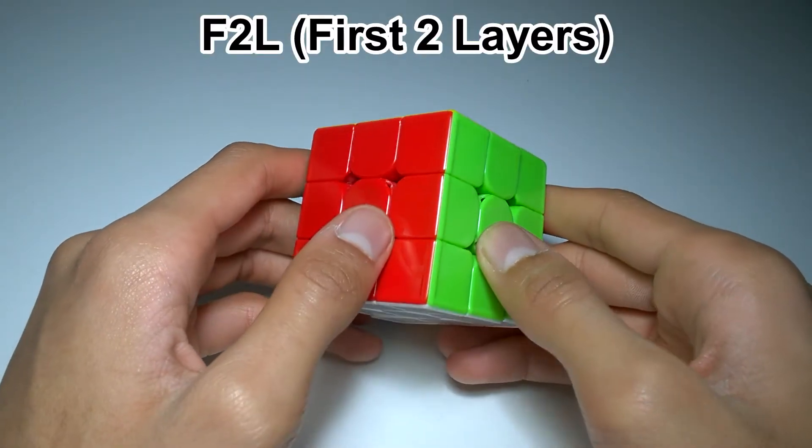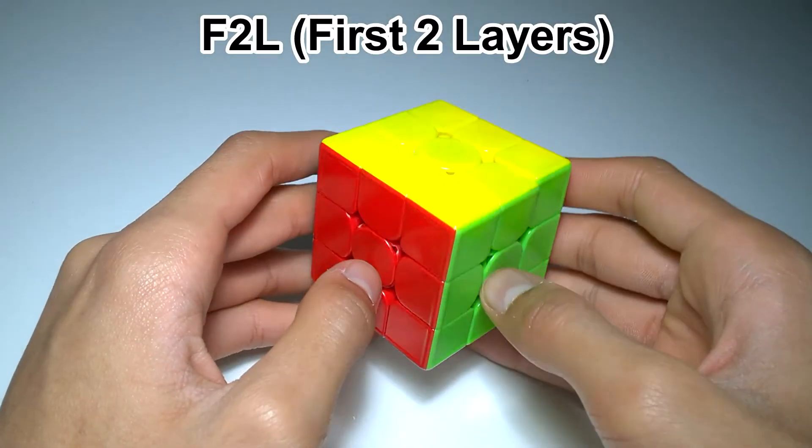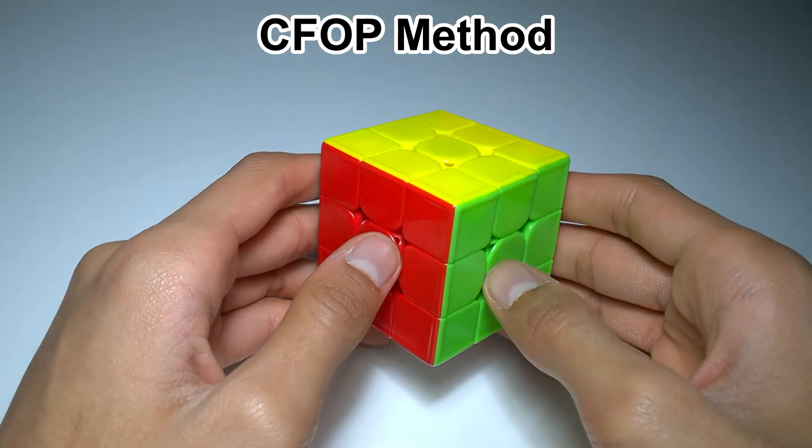F2L stands for First Two Layers. It's a follow-on from Beginner's Method, and it's one of the four components of the CFOP method.